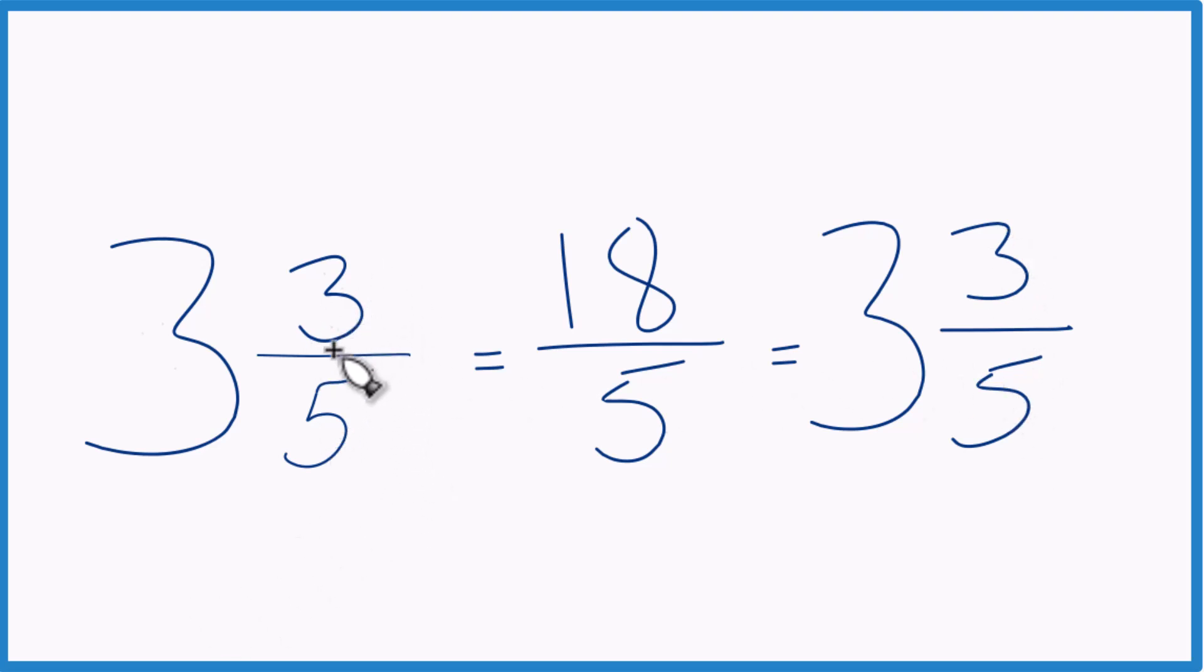So, in answer to our question, the mixed number, 3 and 3 fifths, equals the improper fraction, 18 fifths.